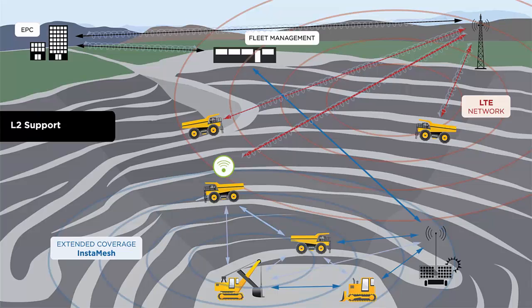The Osprey Hybrid LTE InstaMesh solution encapsulates any of the traffic that is sent over the LTE network in a Layer 2 tunnel, ensuring that this mine's traffic is not only secure, but that the traffic is brought back to the mine's local network and handed off to the servers and other destinations on the network as if it never left. No configuration changes are required on the applications themselves, with the hybrid network taking care to ensure traffic gets where it needs to go without interruption.